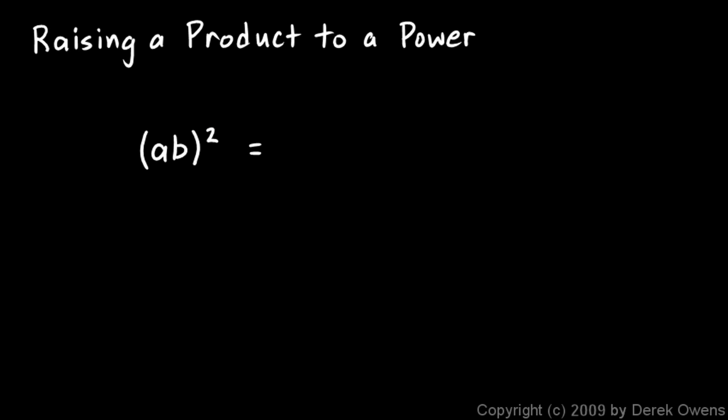What does that mean? Well, for something to be squared, that means it's multiplied by itself. So in this case, it's this thing, the a times b, that is multiplied by itself. So this has to equal a times b times a times b. And you should be able to see that that simplifies to a squared times b squared.